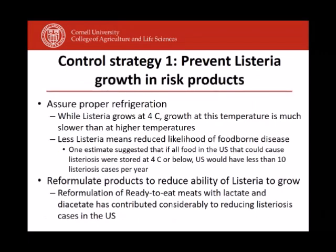This leads us to control strategy number one: prevent Listeria growth in high-risk products. Two key strategies — first, make sure foods are properly refrigerated. Temperature abuse at 7 or 10 degrees centigrade significantly increases the risk of high numbers, making a person much more likely to get sick. An estimate for the US suggested that if all products linked to listeriosis were stored at 4 degrees or below, we would have fewer than 10 cases rather than 1,300.